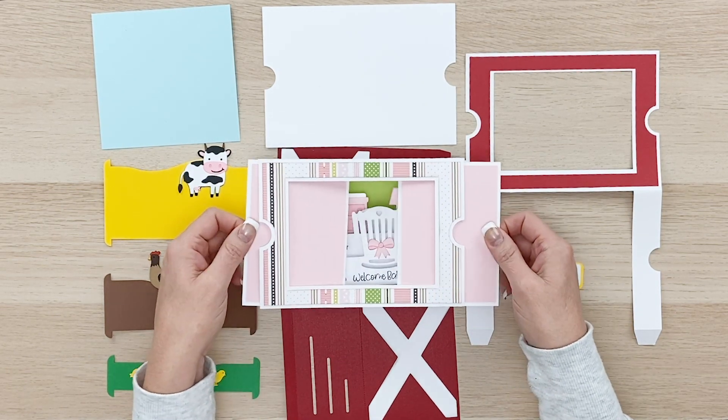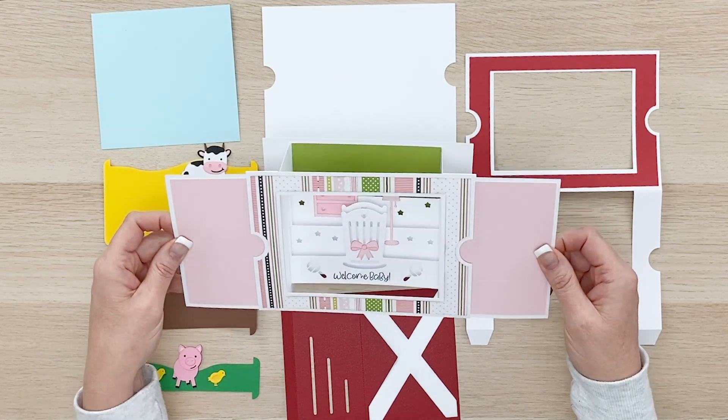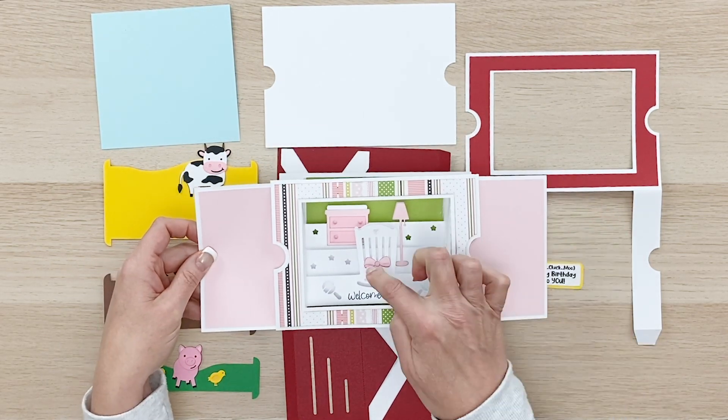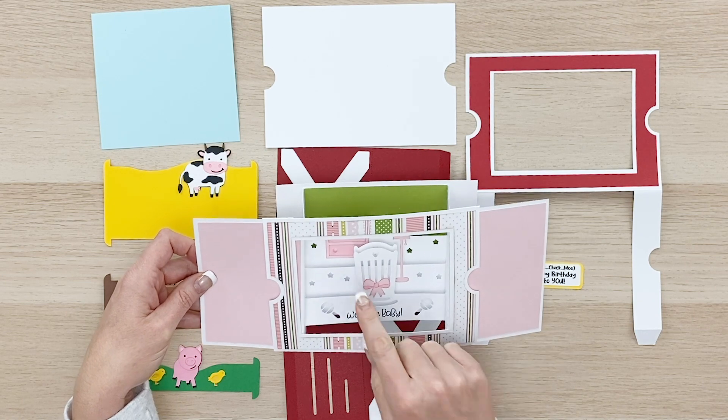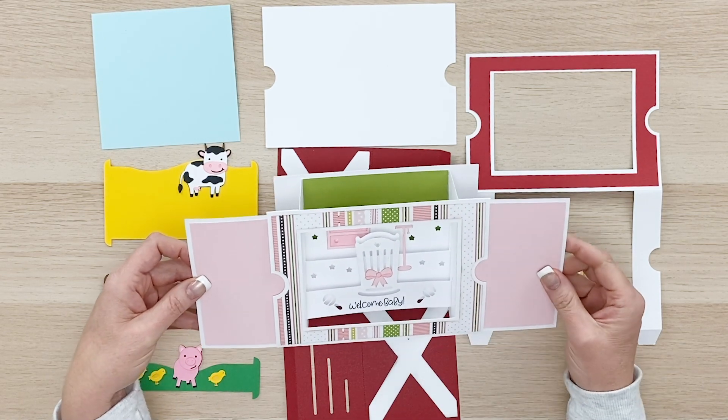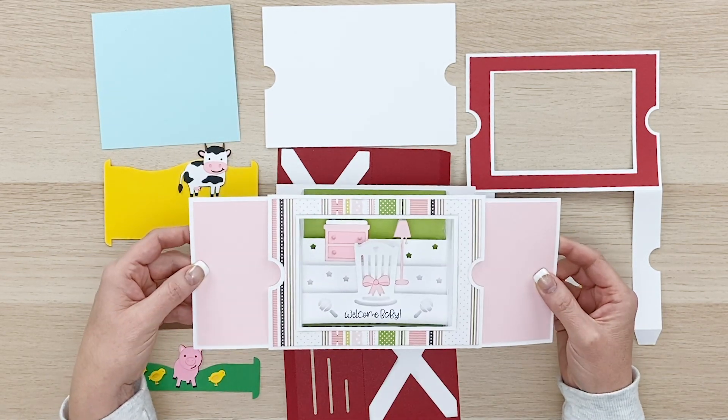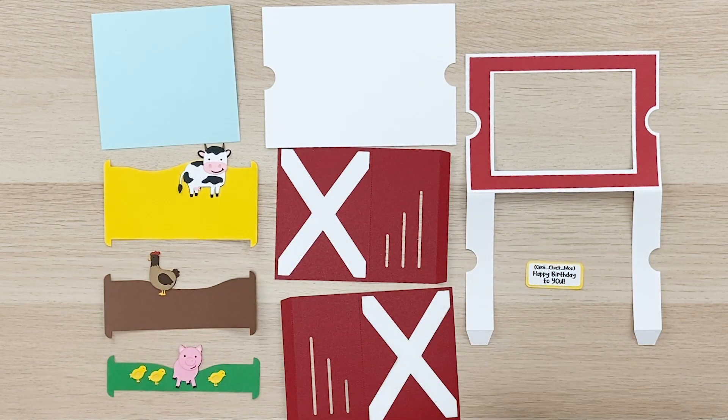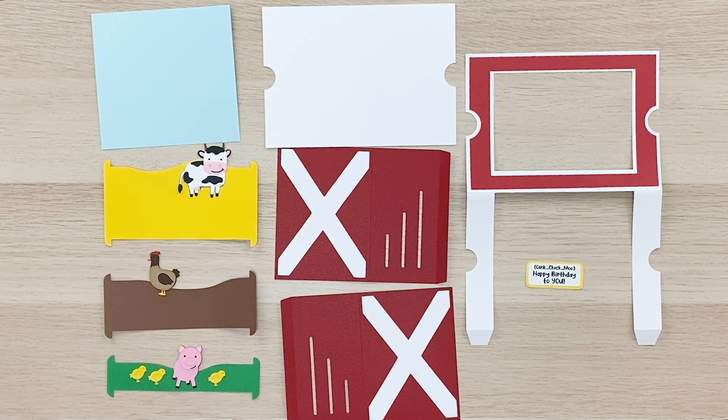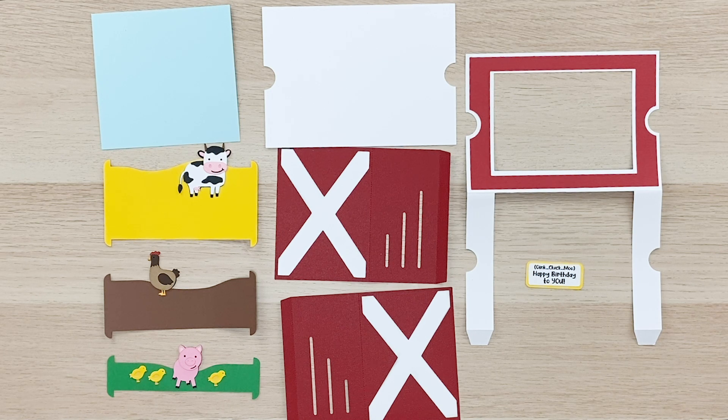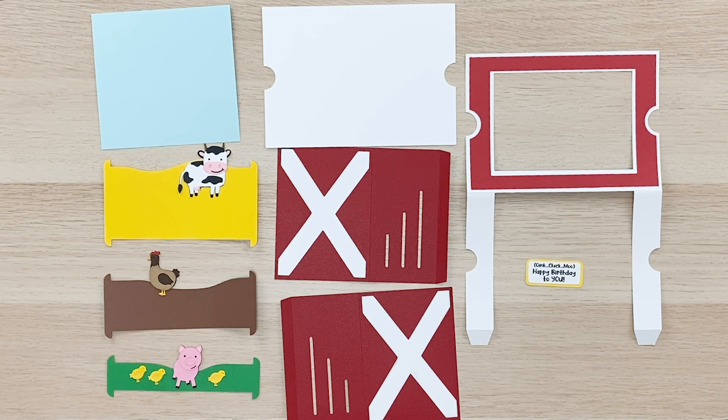And this one is a birthday or a baby card. It's a little baby bassinet rocker bed and a dresser and lamp. Welcome, baby. So cute. So I'm going to show you how to put together a couple more of these. The one that I have down on the table is a cool little barn and we've got a cow and a pig and a chicken and the little sentiment says, oink cluck moo, happy birthday to you. This would be super awesome for a little kid, a little child.